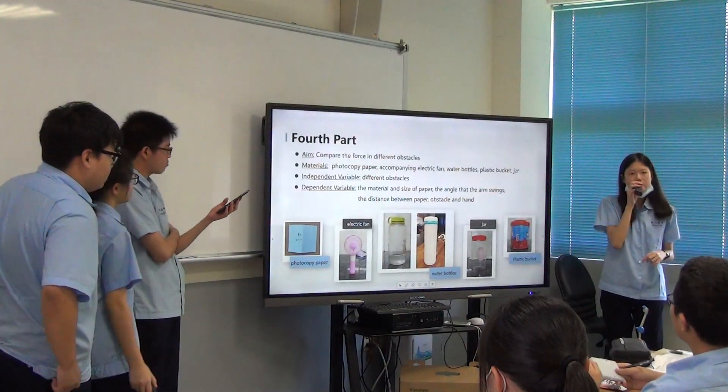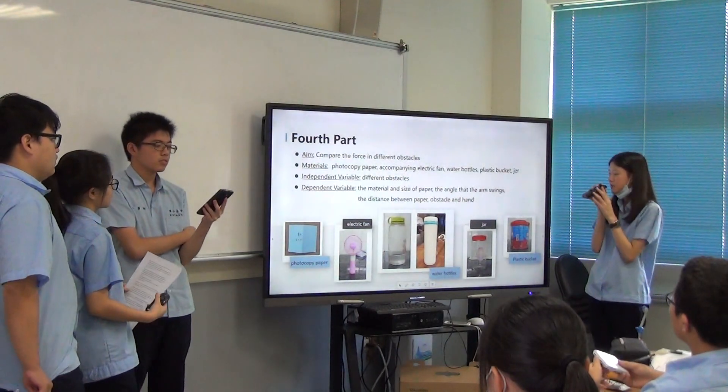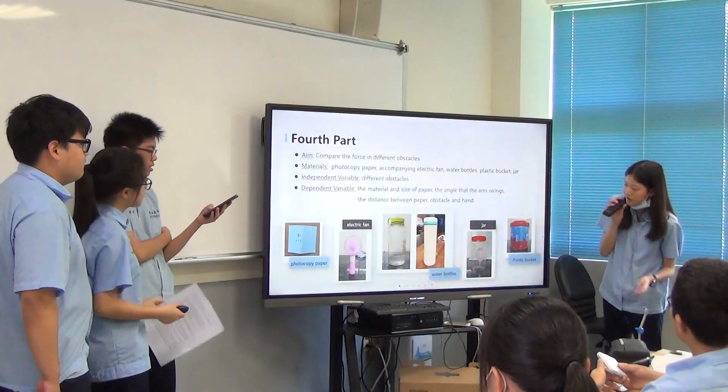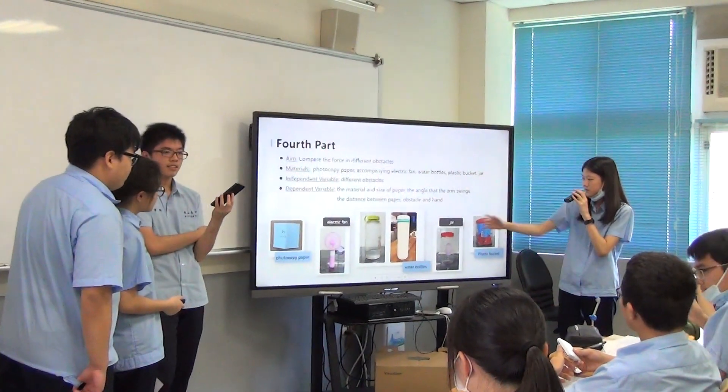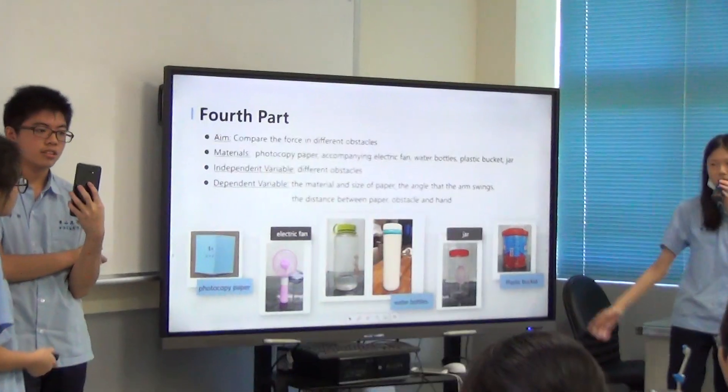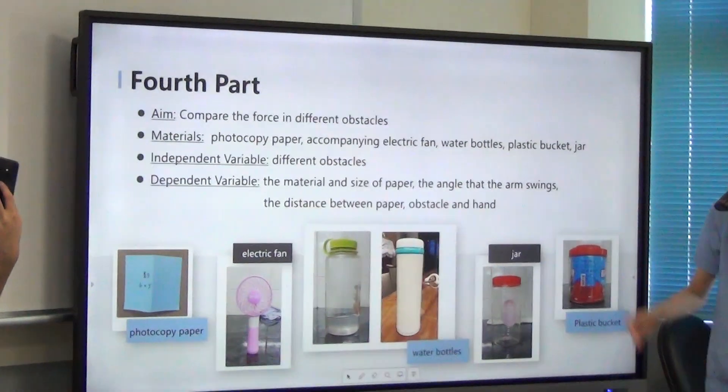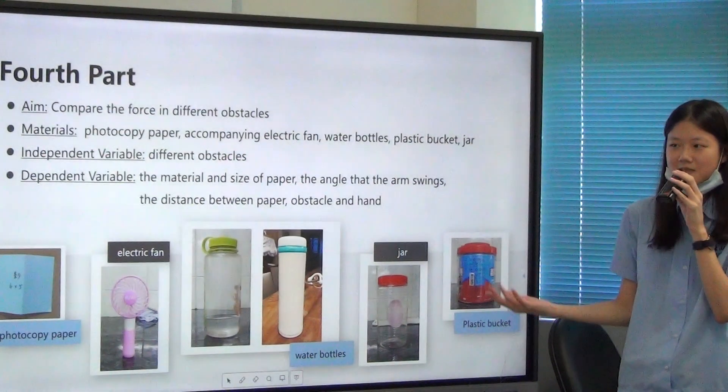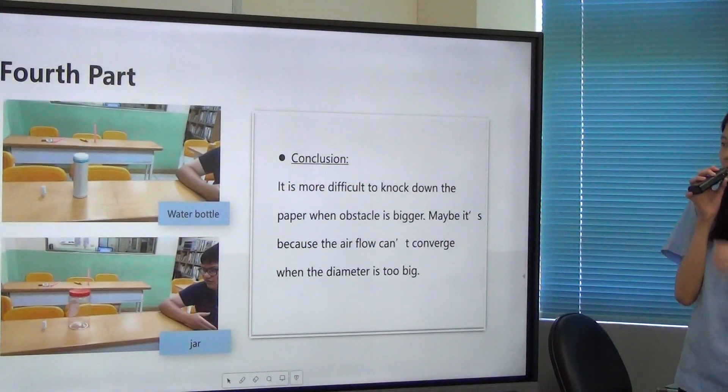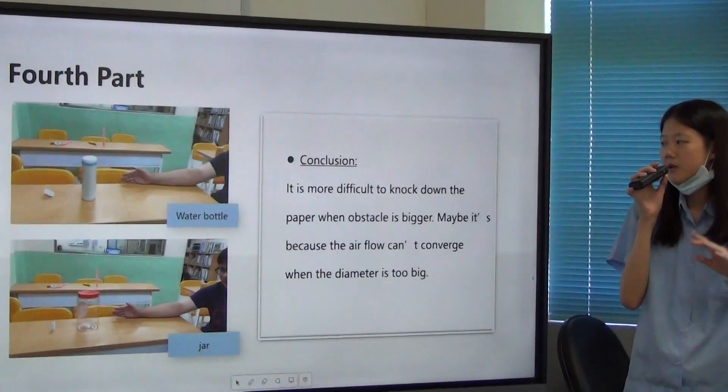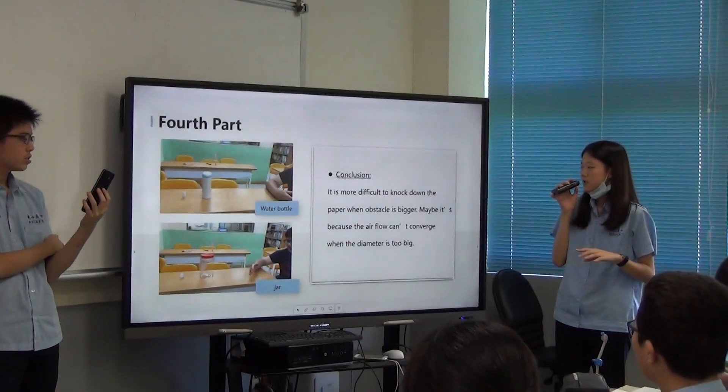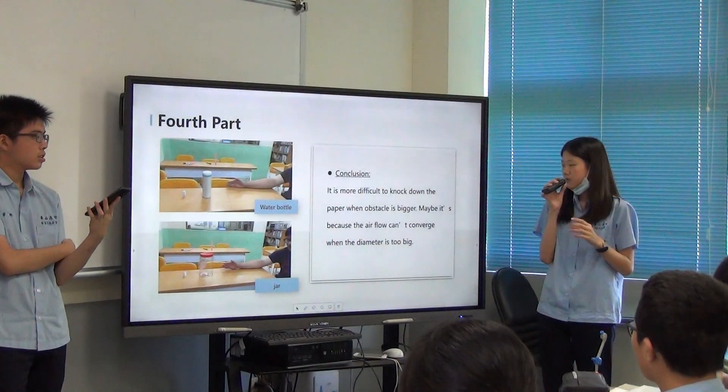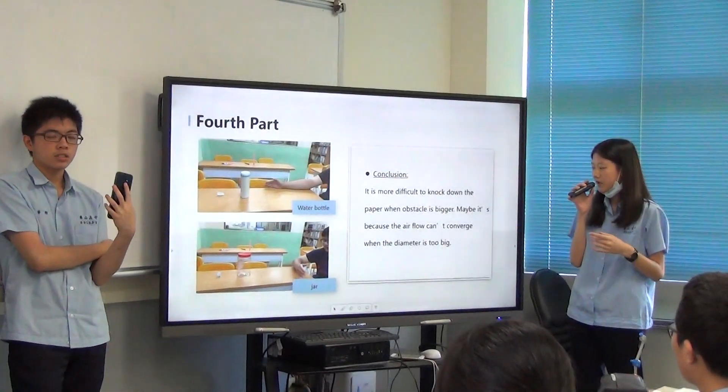And for the fourth part of the experiment, we added some obstacles for the experiment. And the obstacles we used are the electric fan, different sizes of bottle, a jar, and a plastic bucket. And for the conclusion, it's more difficult to knock down the paper when the obstacle is bigger. And we think that maybe it's because the airflow can't cover it when the diameter is too big.